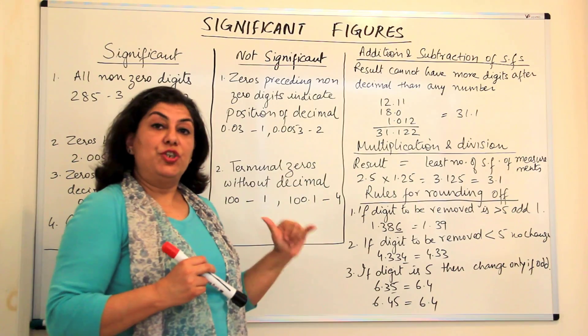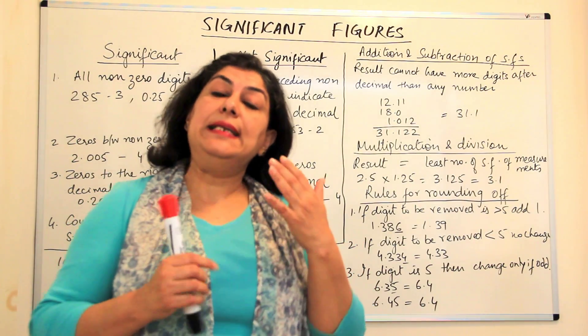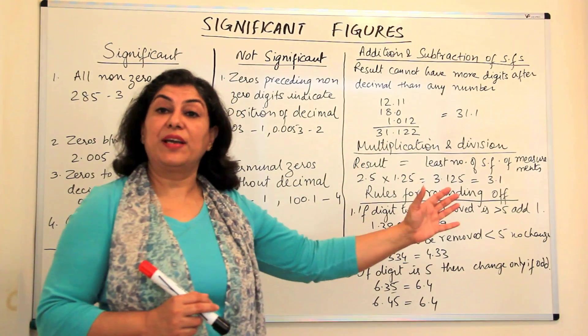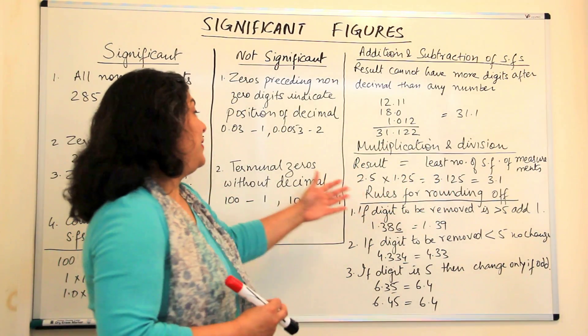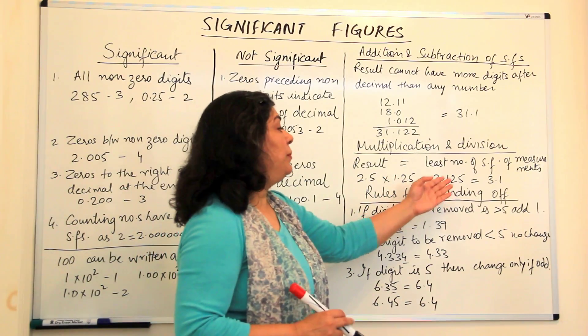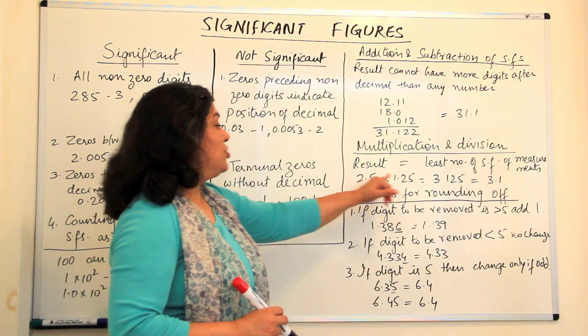In multiplication and division also, we keep in mind that the least accurate measurement is the one which decides how many significant figures would the answer have. Now 2.5 into 1.25 numerically is 3.125.